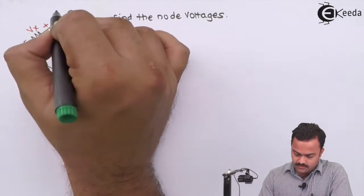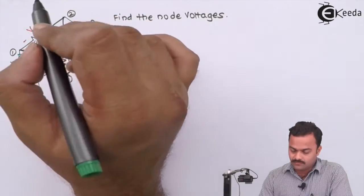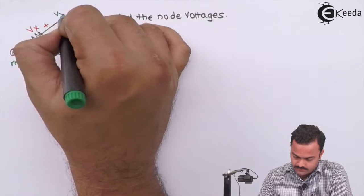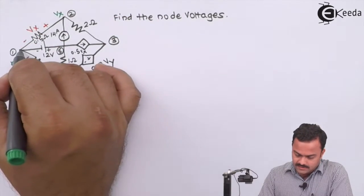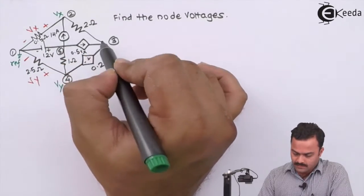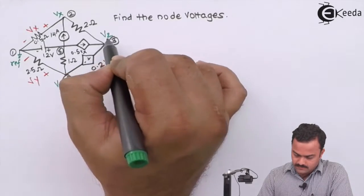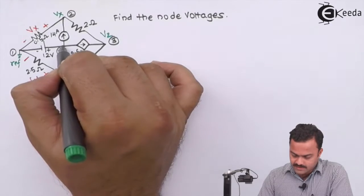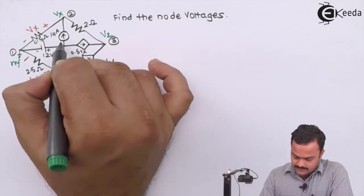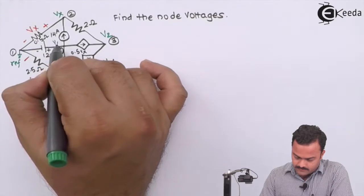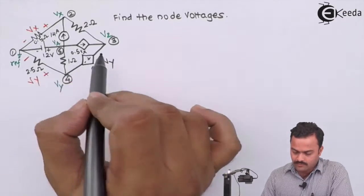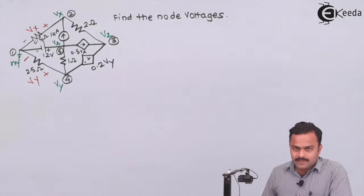The potential of the first key node we will take as Vx. If this is the reference, it will automatically go to node number two and the potential of that node will become Vx. Similarly, the negative terminal connected to the reference means the potential of node number four will be Vy. For another node, we consider Vz — there's no need to mark a separate variable since that potential will be 12 volts, a known quantity.